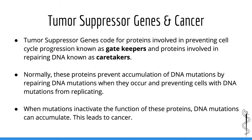So how do tumor suppressor genes ensure that cell division only occurs when necessary? In order to better understand this, we need to understand the function of the proteins coded by tumor suppressor genes. Broadly speaking, tumor suppressor genes code for two kinds of proteins. The first kind is proteins involved in preventing cell cycle progression — these are known as gatekeepers. The second kind are proteins involved in repairing DNA — these are known as caretakers.